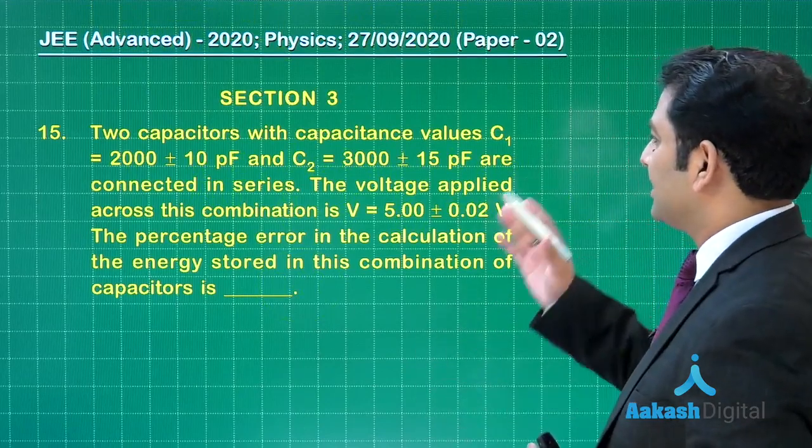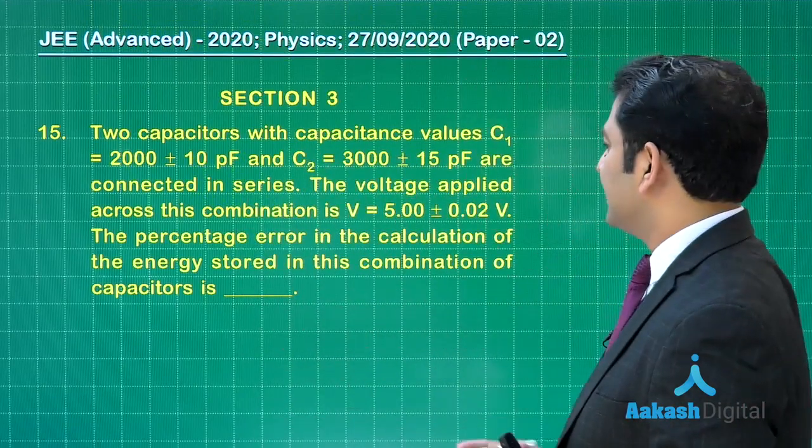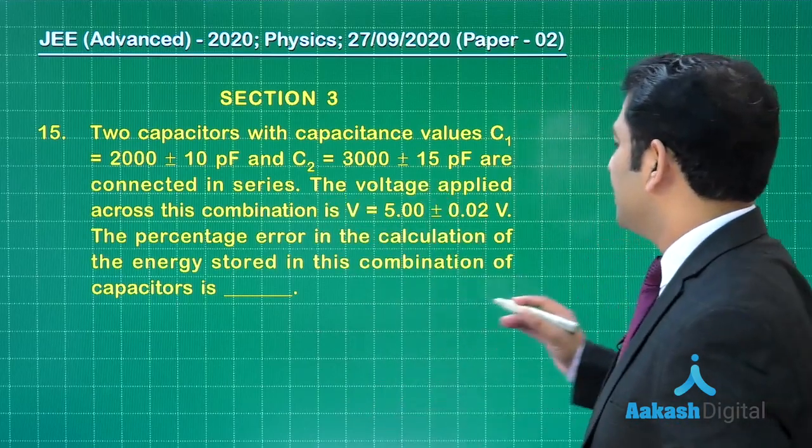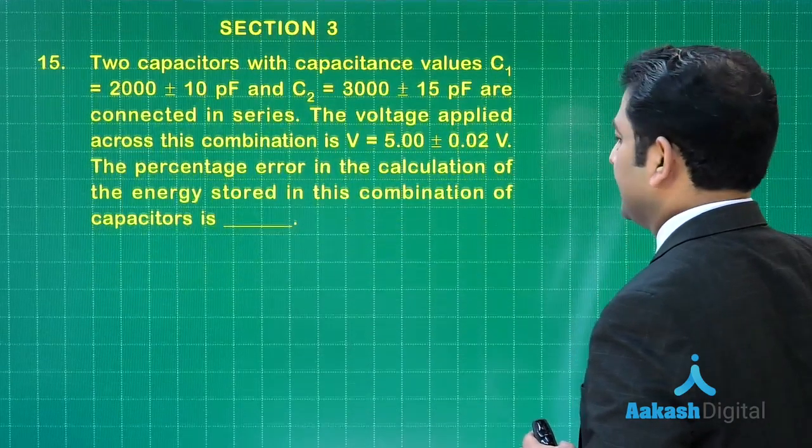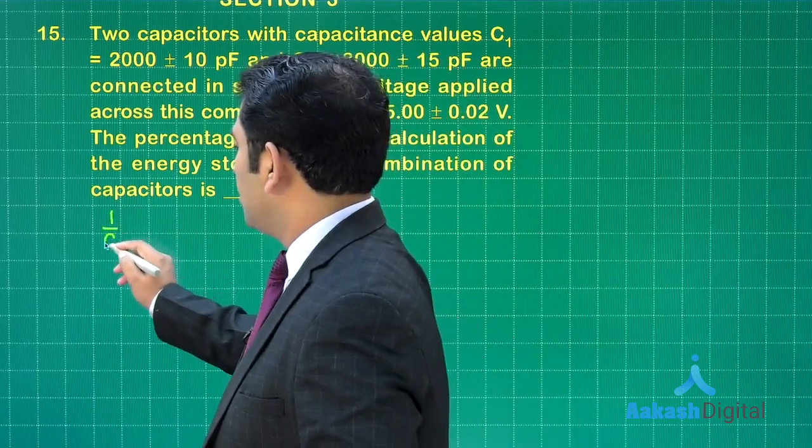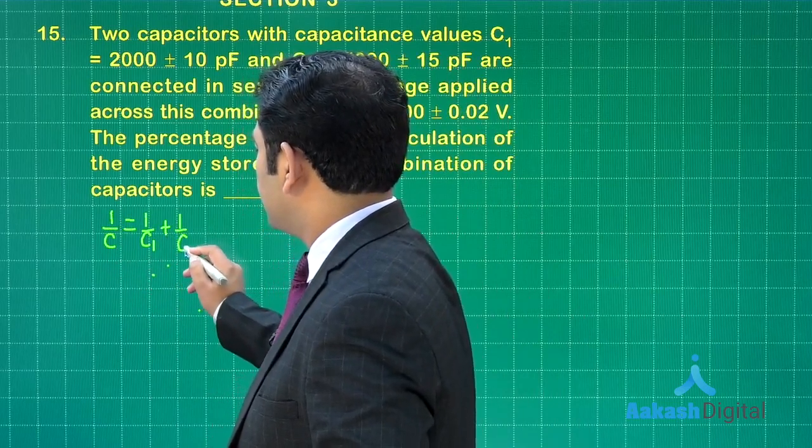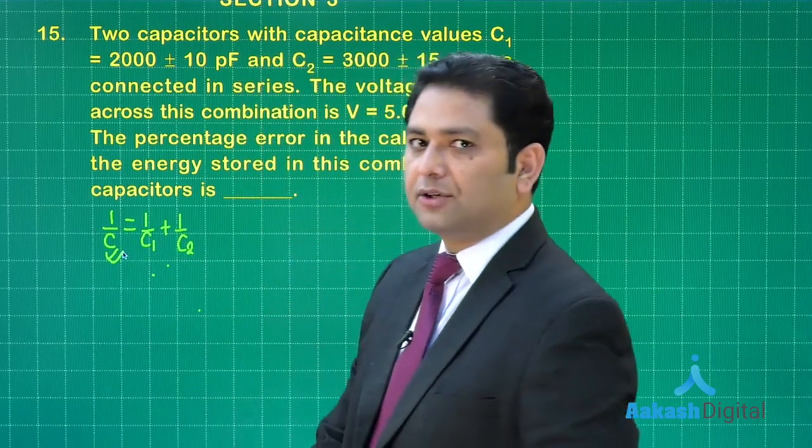The next question: there are two capacitors C1, C2 with the given error limit. They are connected in series. Voltage applied is also given. We need to calculate the percentage error in calculation of energy. So this will be divided into two steps. First of all, 1/C is 1/C1 plus 1/C2, and you can easily calculate the value of C. That is no problem.